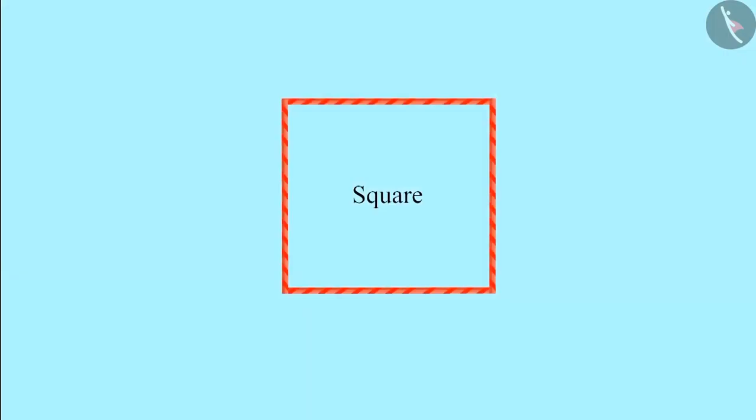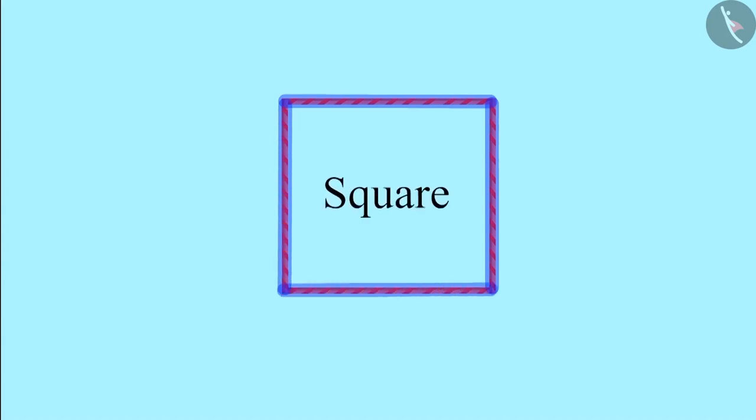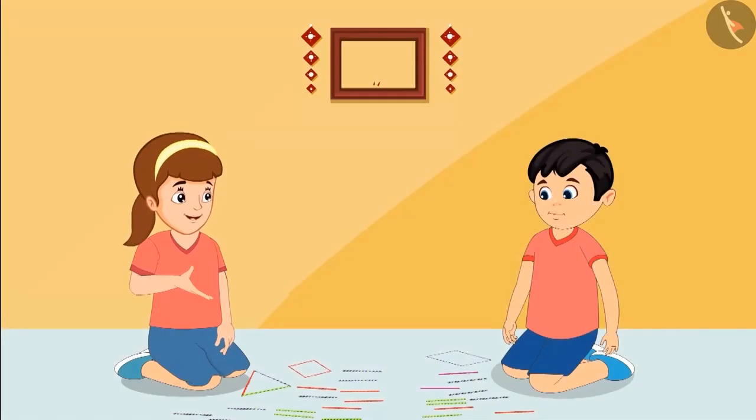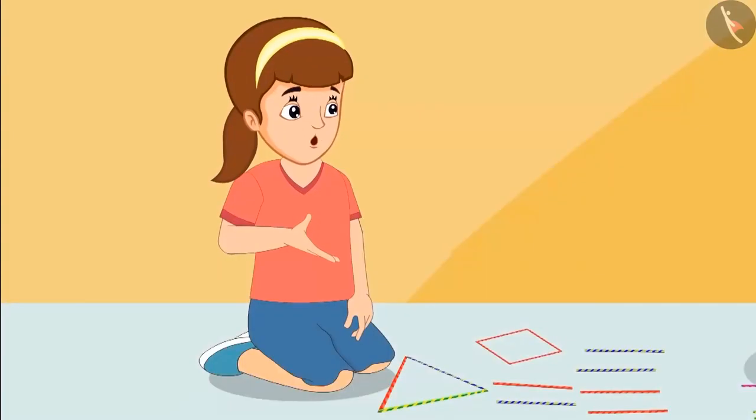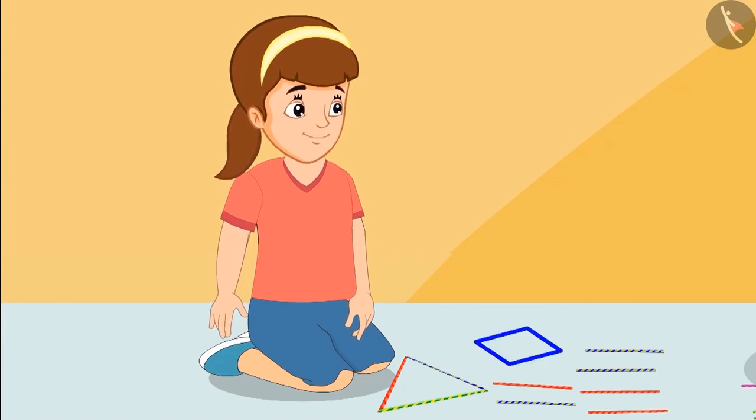Yes, this shape is also made of four straws. But the shape is made of four lines which are of the same length. So it is called a square. Okay. Fine Chotu, I have understood. This means that this shape is square because it is made of four equal length straws.